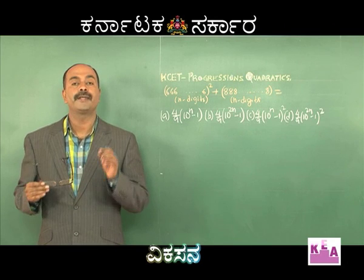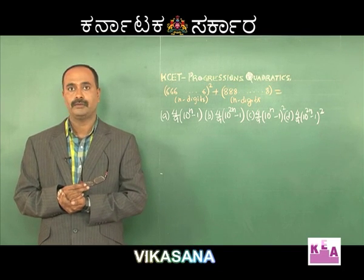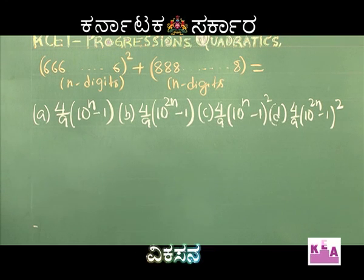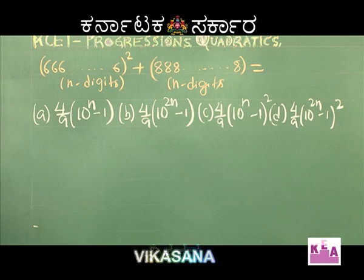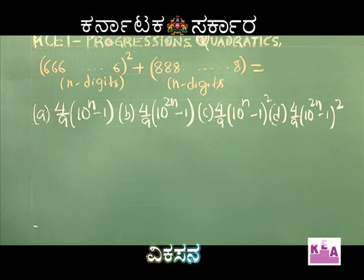By using common sense, we can solve even tricky-looking problems. The next problem is: 666...6² + 888...8 (n digits each) equals which option? A) (4/9)(10^n - 1), B) (4/9)(10^2n - 1), C) (4/9)(10^n - 1)², D) (4/9)(10^2n - 1).